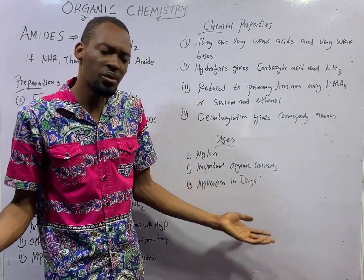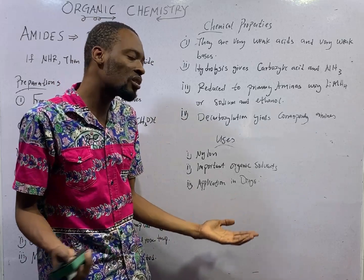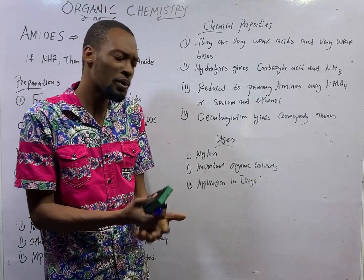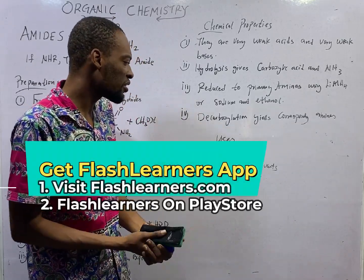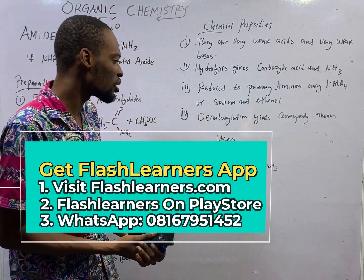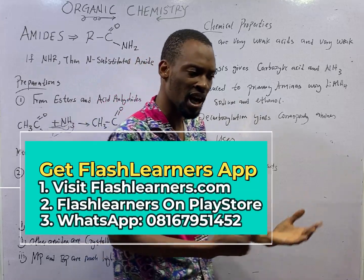What are the uses of amides? They are used to make nylon. They are important organic solvents. And they find application in drug making.